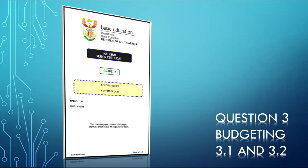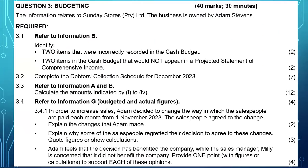I'll be doing question three, budgeting, focusing more on 3.1 and 3.2. Question three, budgeting is for 14 marks — you need to finish it in 30 minutes.